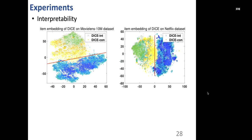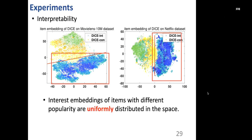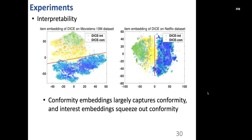With respect to interpretability, we visualize the learned item embeddings of DICE on the two datasets. Specifically, we divide all the items into three groups, which are popular, normal, and unpopular, and we plot items of different groups with different colors. We can find that conformity embeddings of items with different popularity form layers, while interest embeddings of items with different popularity are uniformly distributed in the space. In other words, conformity embeddings largely capture conformity, and interest embeddings squeeze out conformity.